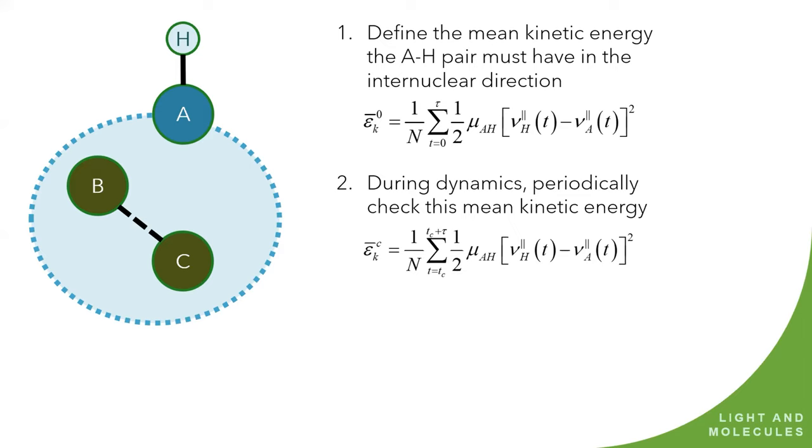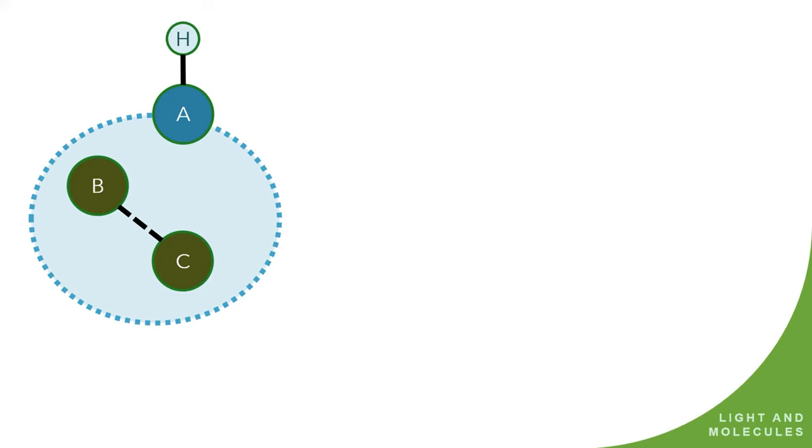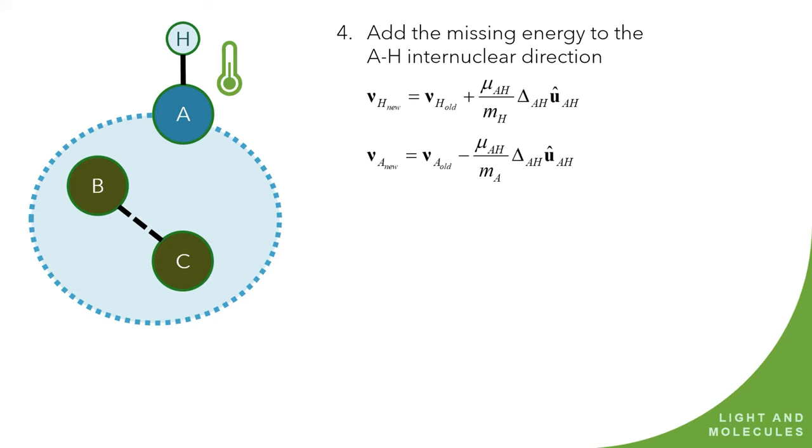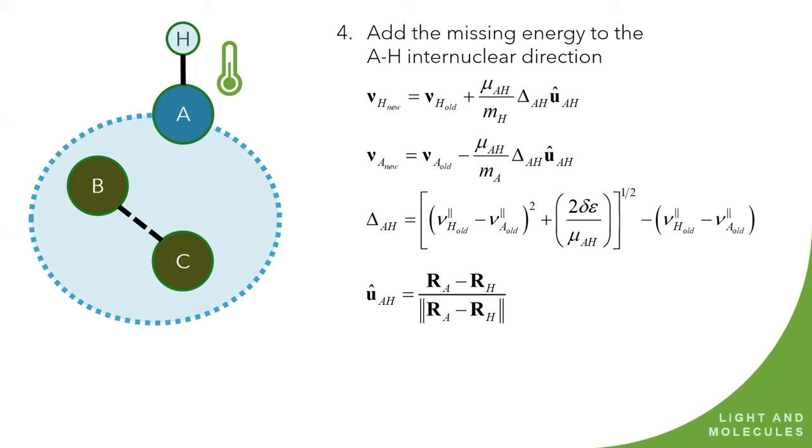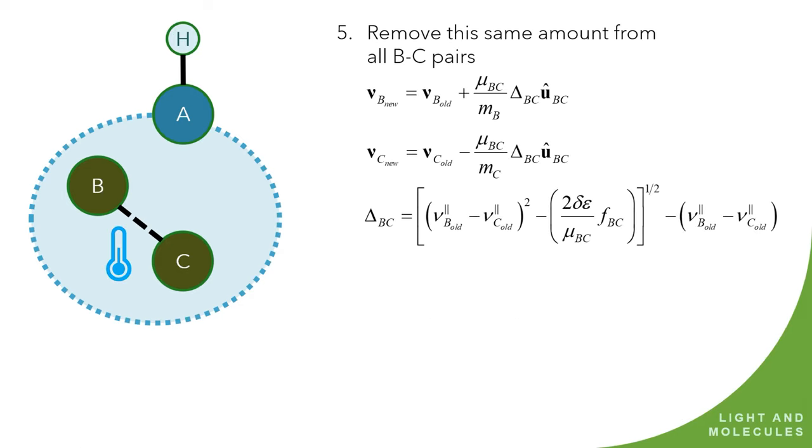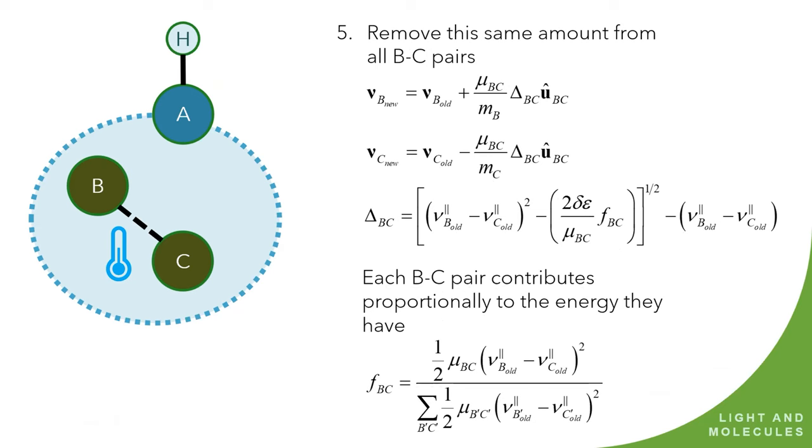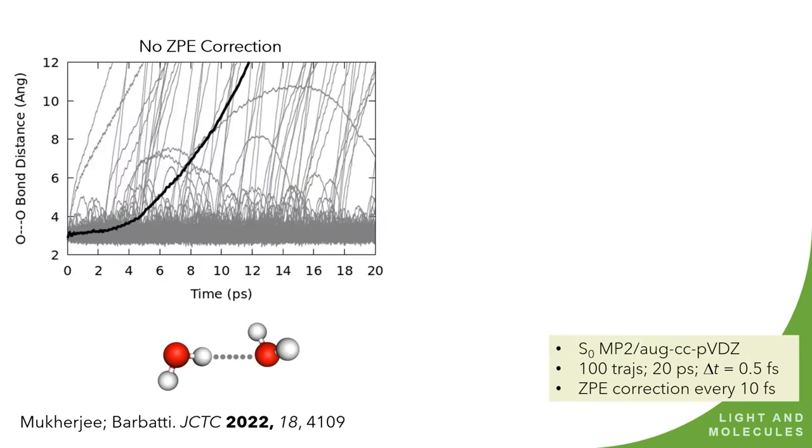It's just like that to define your bond pairs. You don't even need them to be bonds. It's just atom pairs. You run the dynamics to get how much energy you have initially in each pair. And you use this quantity here, this epsilon k0, as a measurement of how much energy you must keep in your system during the dynamics. Then during the dynamics, you compute this average again and compare. And every time that you have a delta that's smaller than a predefined parameter, you apply the correction that consists of rescaling the velocity in the internuclear direction.